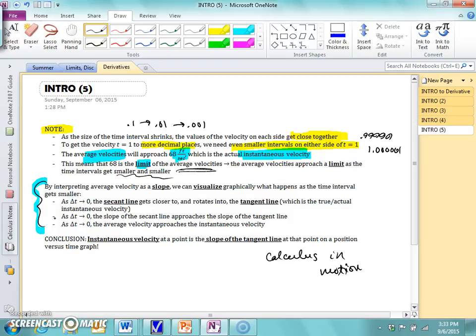What we're going to start doing is interpreting average velocity as a slope, which lets us visualize graphically what's happening as the time interval gets smaller. So as your time interval goes to 0, meaning it gets smaller and smaller and smaller, the secant line, which is an approximation, gets closer to and will actually rotate into the tangent line, which is the true instantaneous velocity.